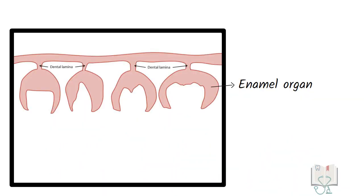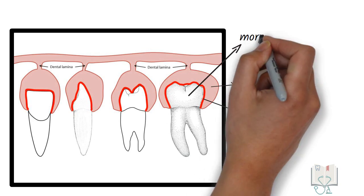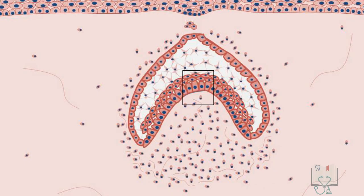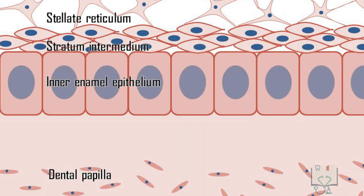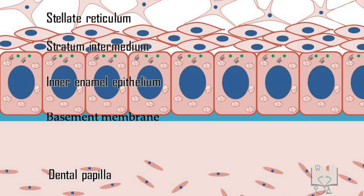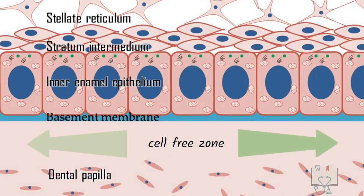Morphogenic stage: The cells of the inner enamel epithelium decide the morphology of the crown of the tooth to be formed, hence the name morphogenic stage. In this stage, the cells are short columnar with large oval nuclei filling the cell body. The mitochondria are evenly distributed in the cytoplasm, whereas the Golgi bodies and centrioles are located at the proximal end. A basement membrane attaches to these cells, separating them from the connective tissue of the dental papilla, and there is a cell-free zone just beneath the inner enamel epithelium in the dental papilla.